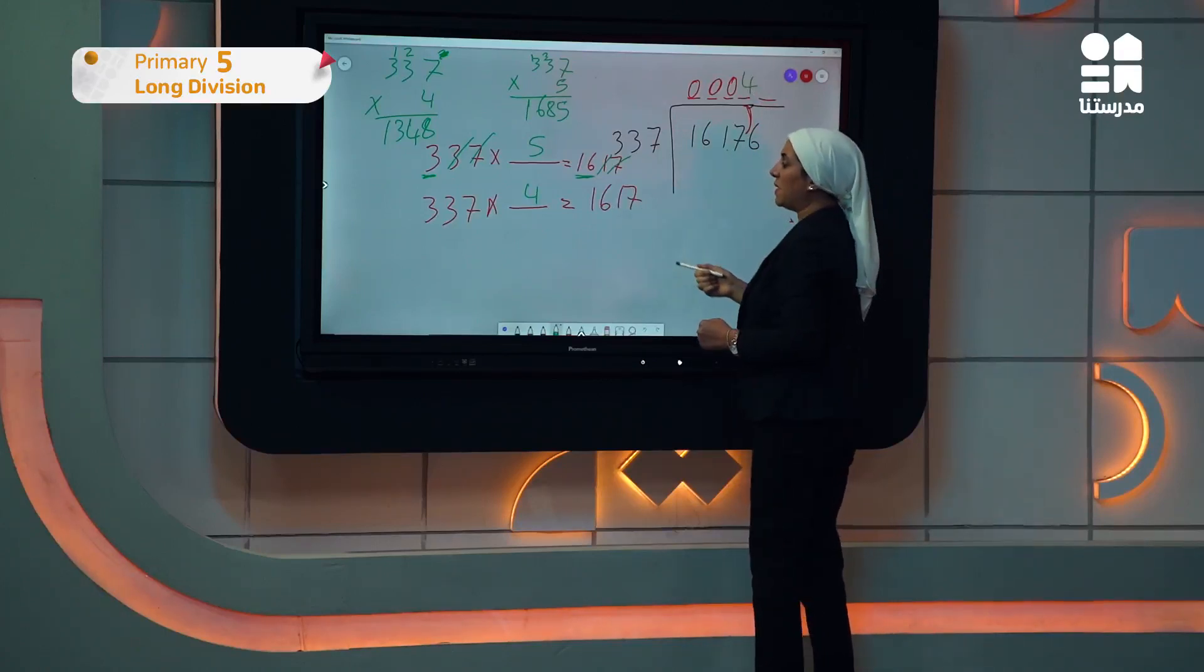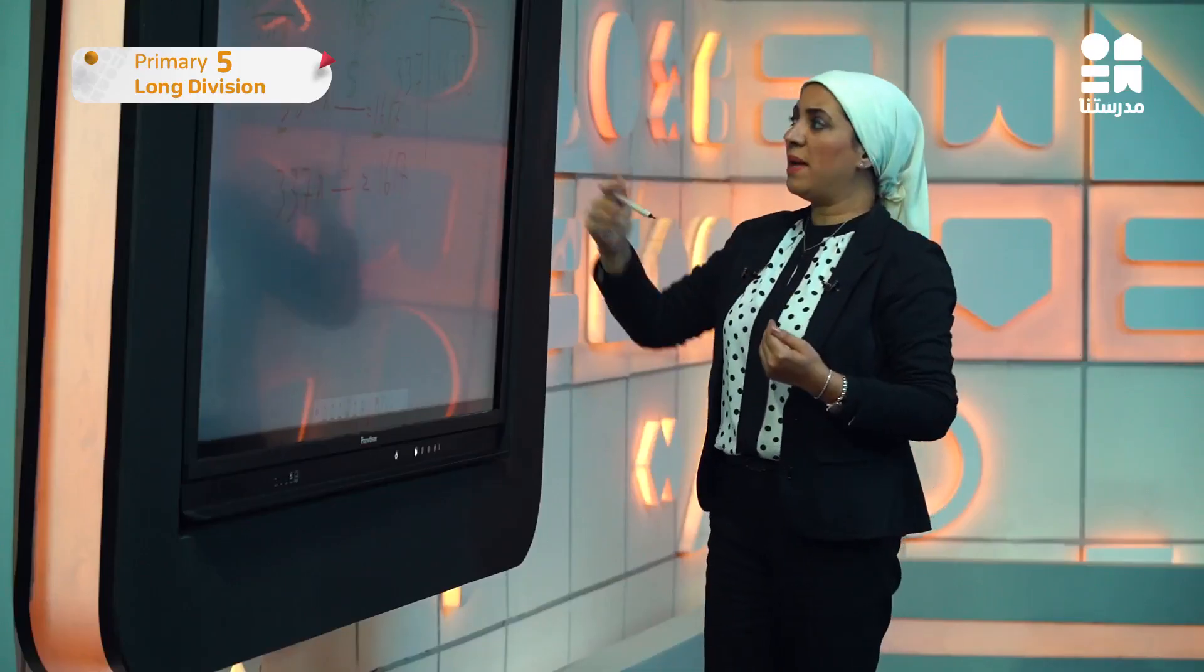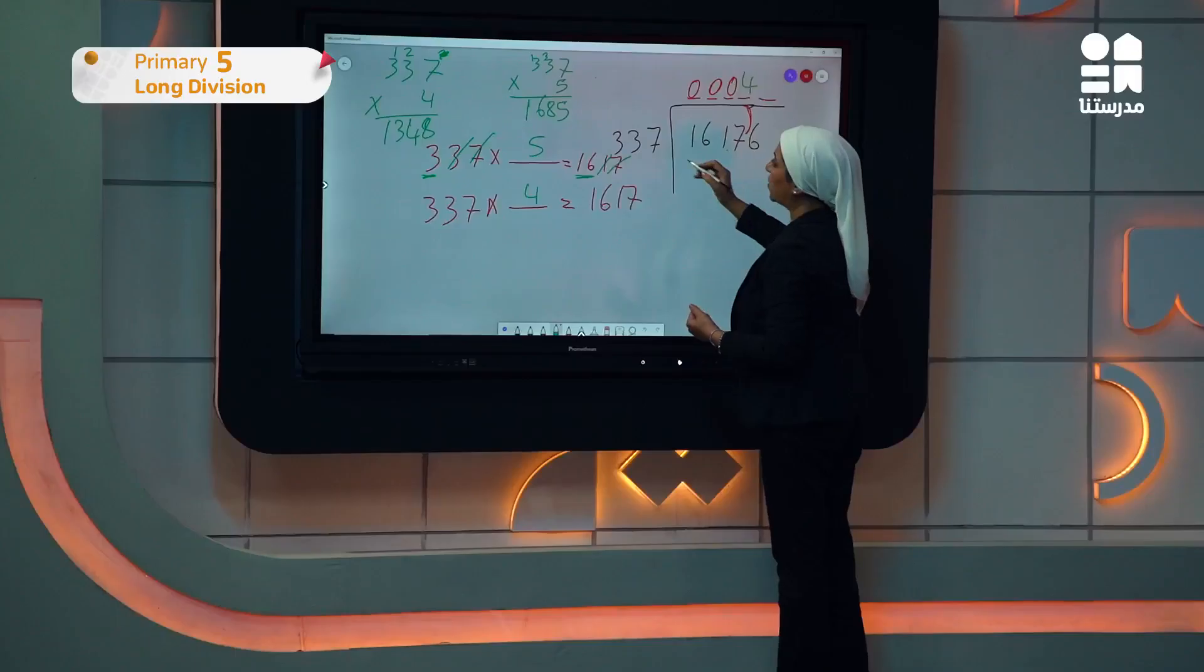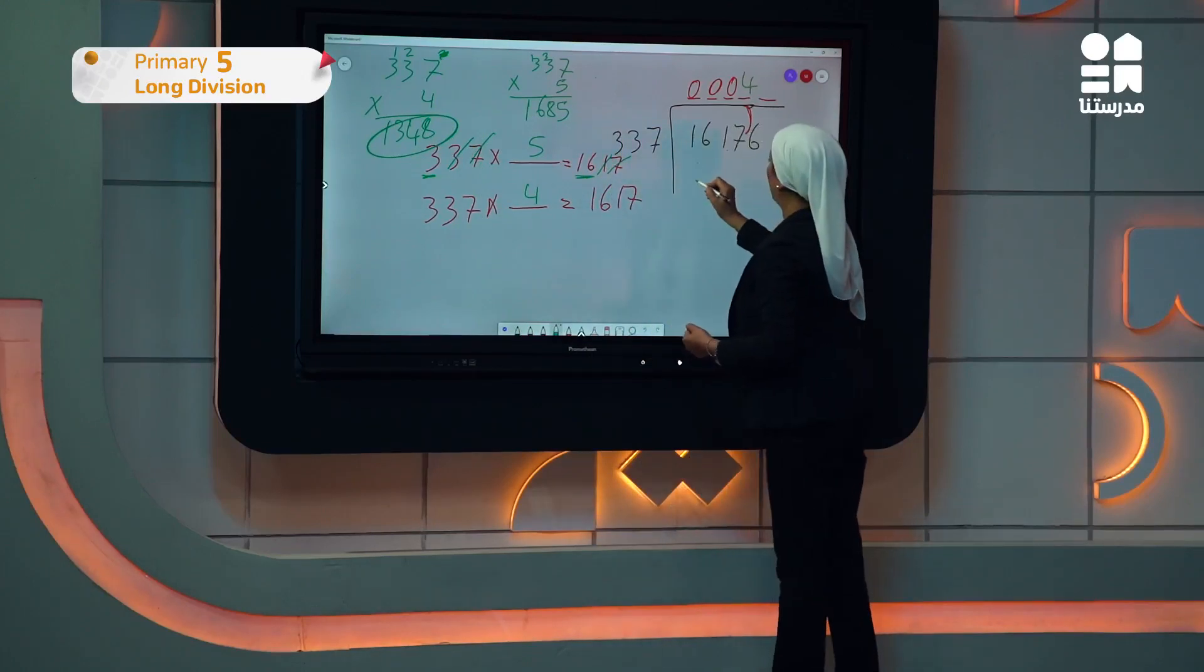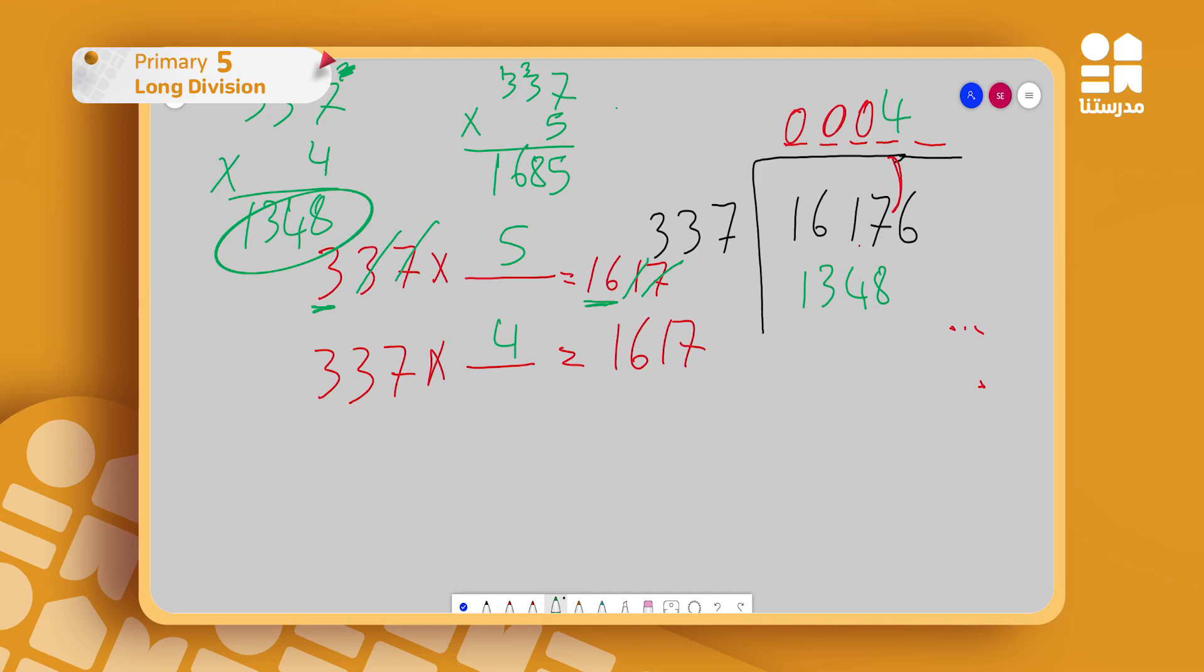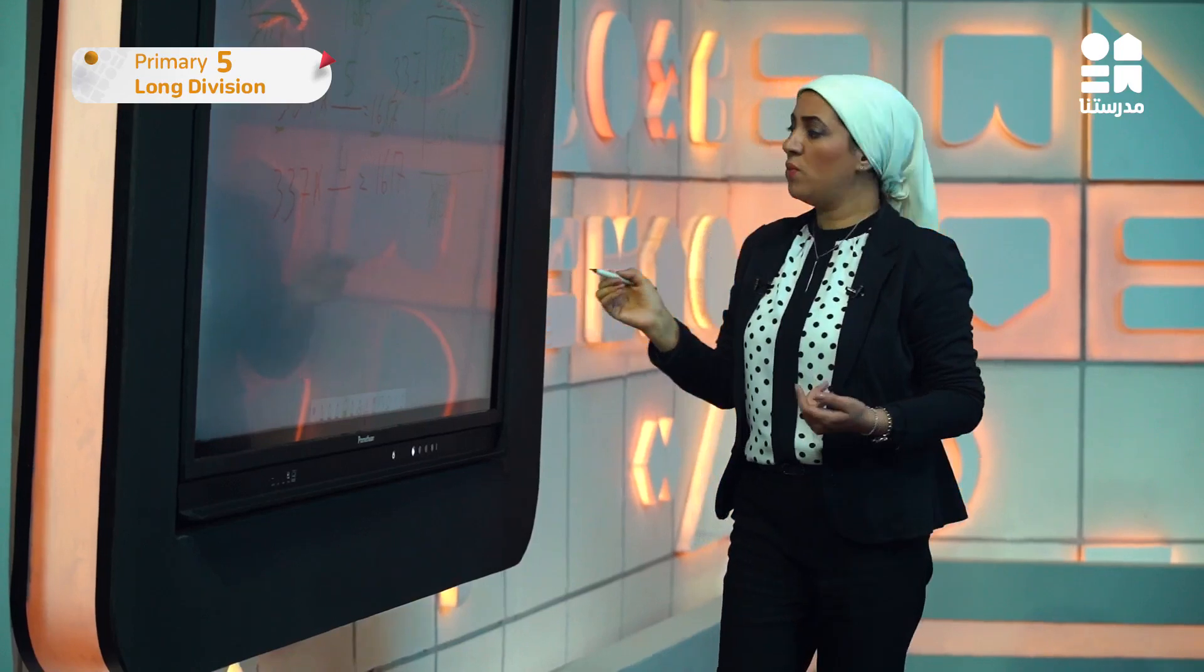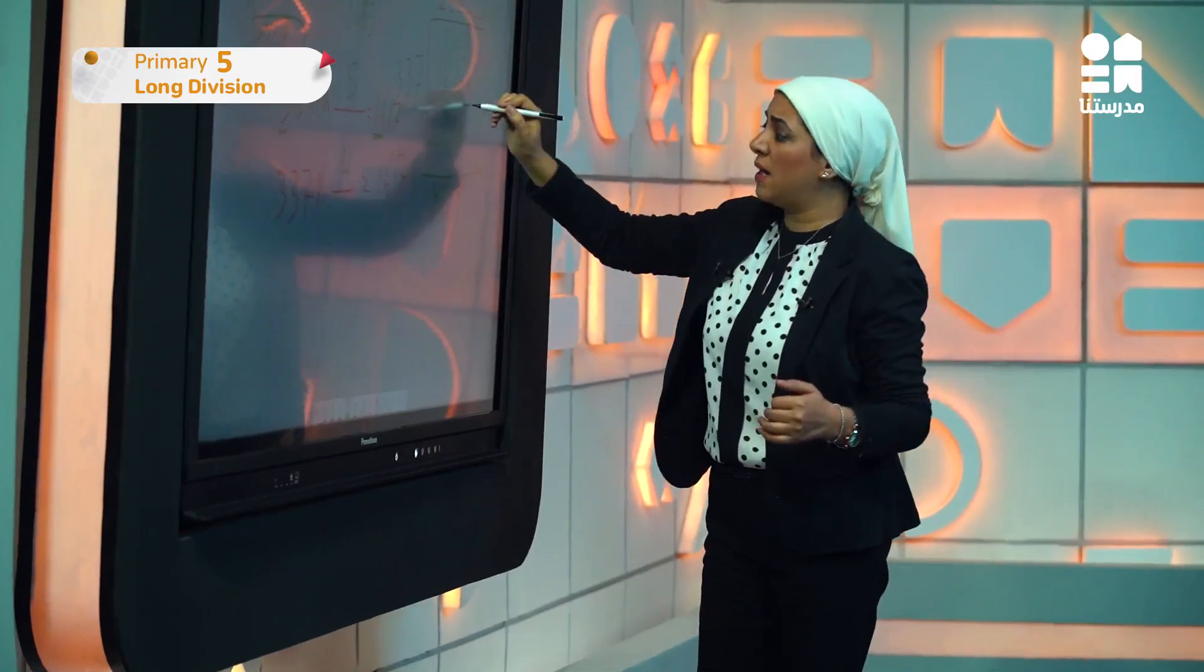1617 divided by 337 is 4. I write 1348 here, then I subtract, step 3, the sister. 7 minus 8: I will borrow from the 1, which becomes 0, and the 7 becomes 17. 17 minus 8 is 9. 0 minus 4: I'll borrow from the 6, which becomes 5, and the 0 becomes 10. 10 minus 4 is 6. 5 minus 3 is 2, and 1 minus 1 is 0.